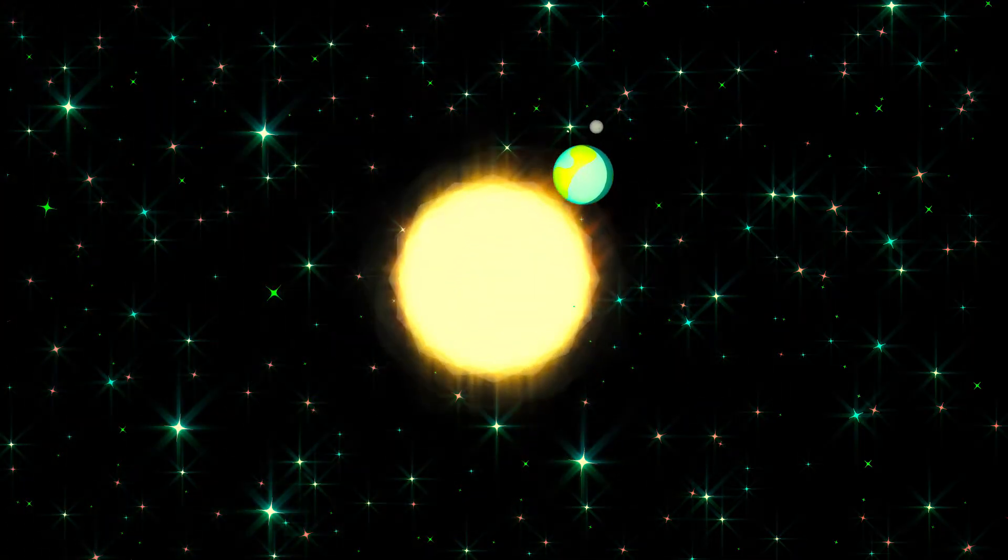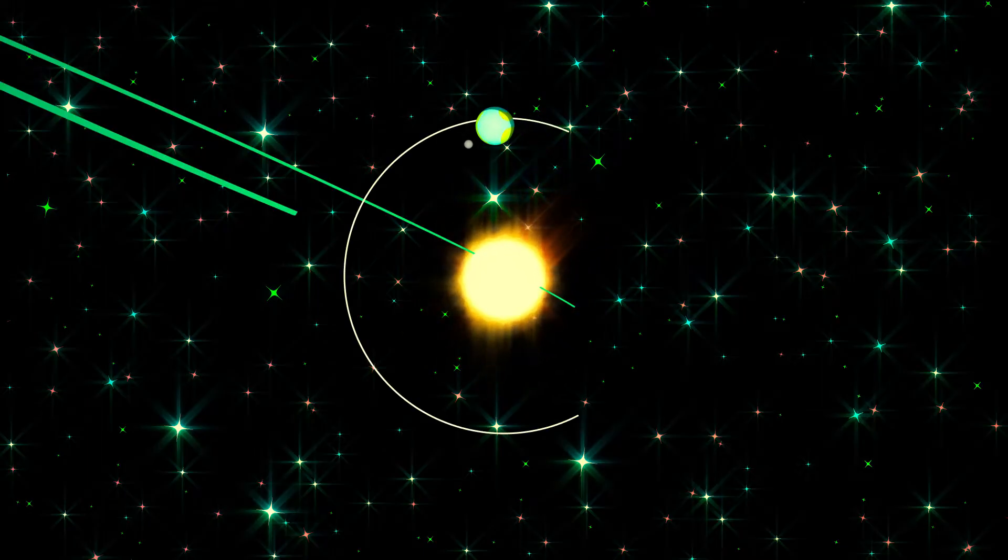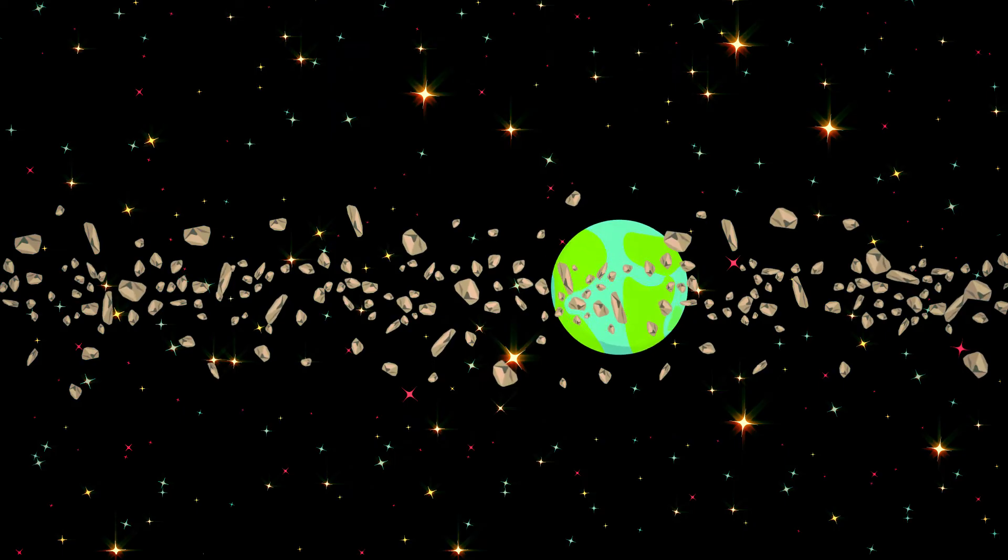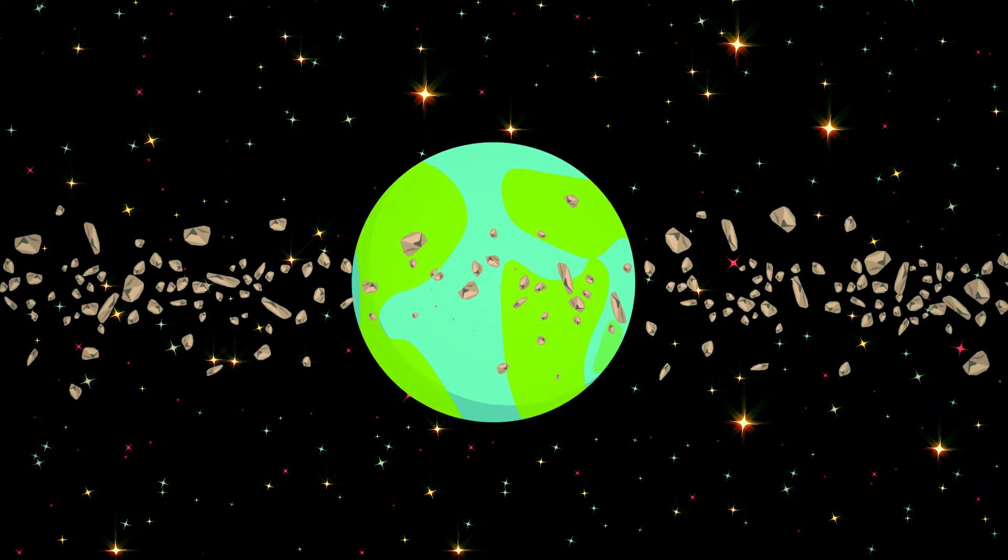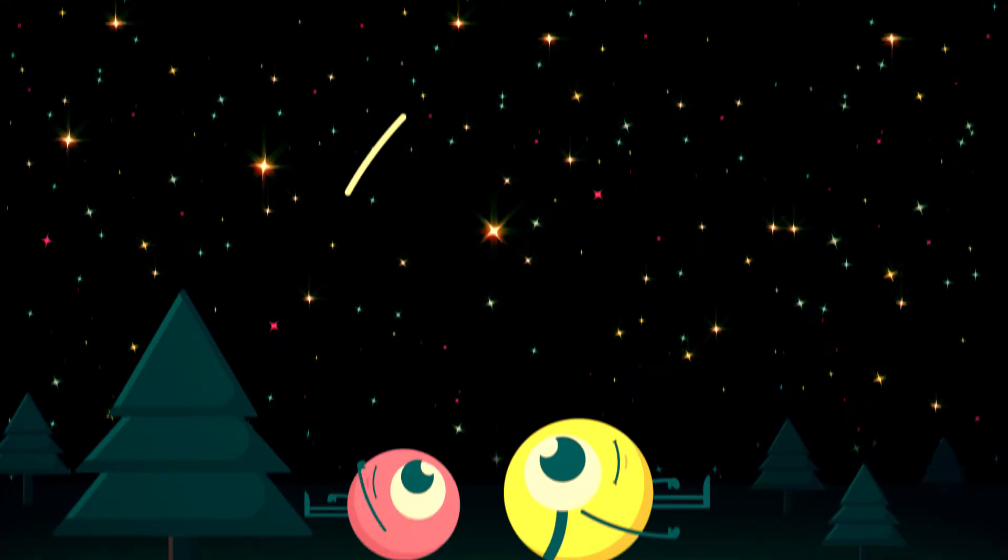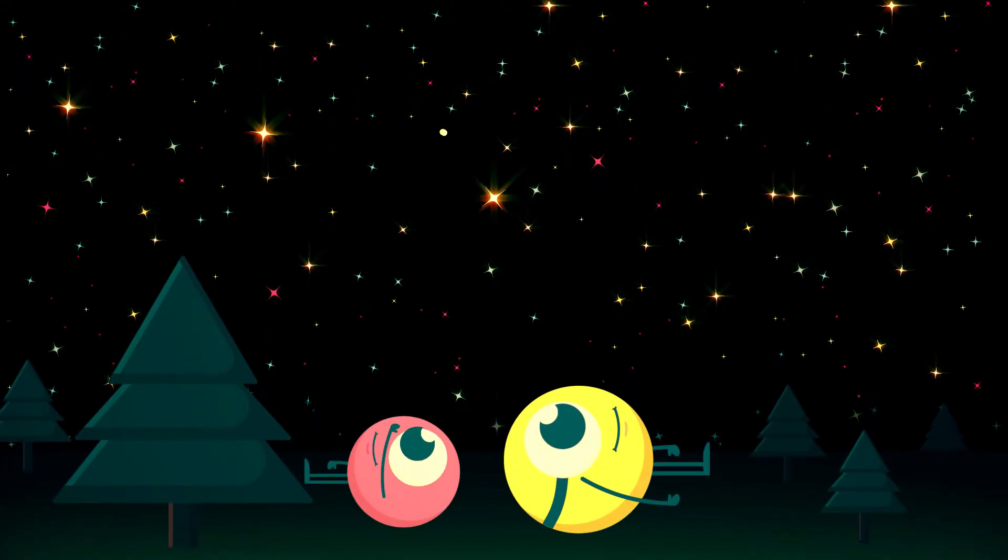Every year, Earth passes through the orbital path of the comet Swift-Tuttle. Debris from the comet is littered along this path, and as Earth goes through it, the debris falls to the Earth, which is seen to us as a barrage of shooting stars or a meteor shower.